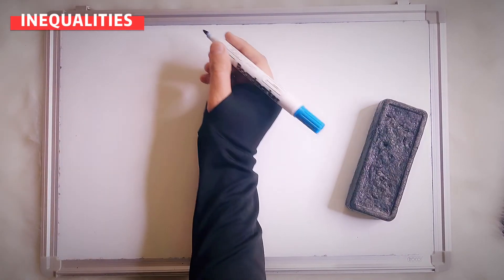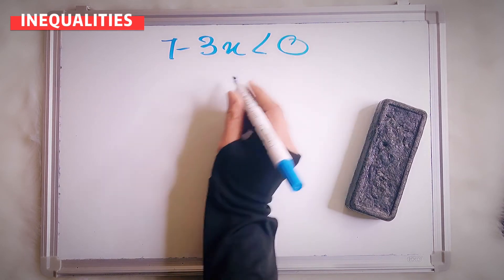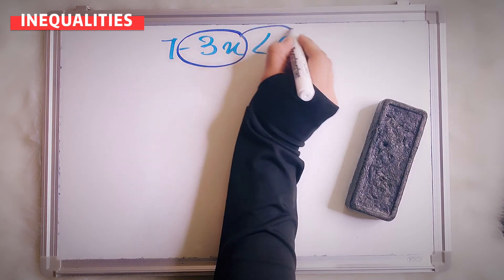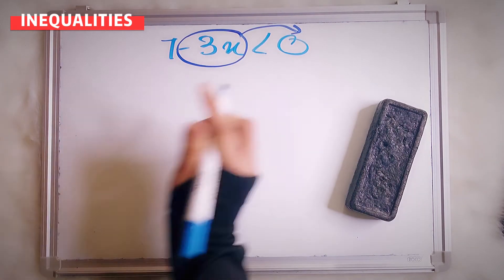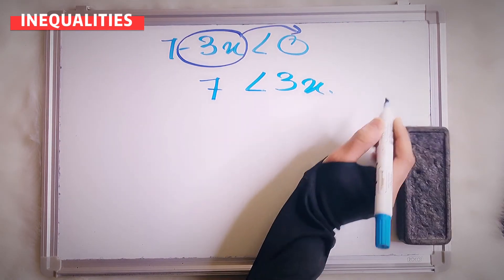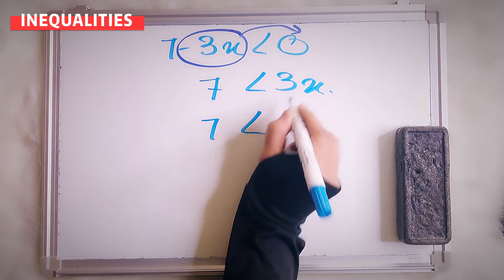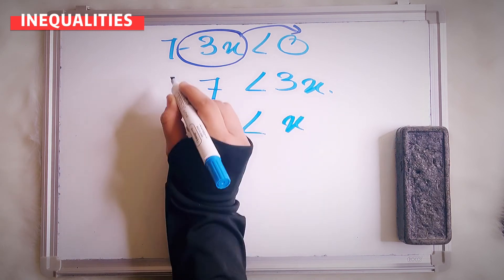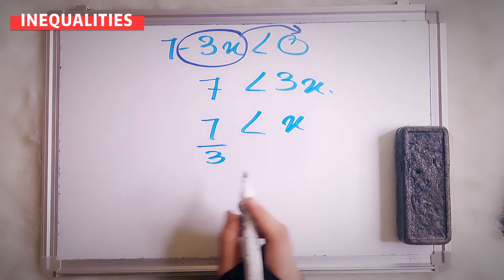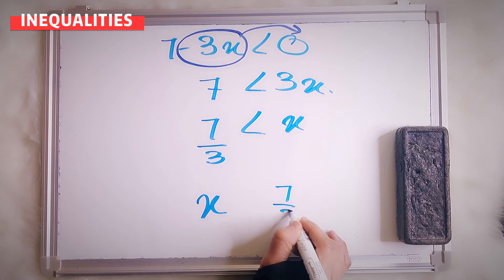Let's say I give you one more: 7 minus 3x less than 0. Definitely I will bring the negative 3x to a different side. So you will have here 7 and 3x. So now 7 less than — here you have to divide, because this is multiply, you want to change to divide. So your answer is 7 over 3 less than x. So you have to put x here and 7 over 3 here.